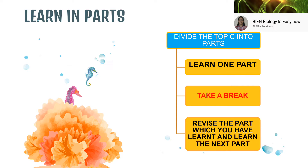The next part is to learn in parts. I have seen students sitting throughout the day just learning continuously. Our brain is not programmed to grasp many things at one point in time. So you need to divide the topic — learn one part, take a break, then revise what you have already learned, and then take up another part. For example, if you have started with the chapter on the cell, you do its definition, the three main parts of the cell, and the cell theory.